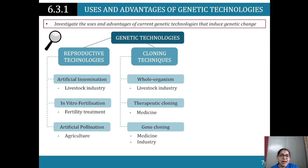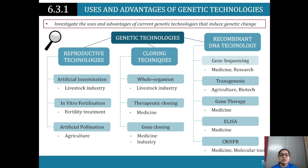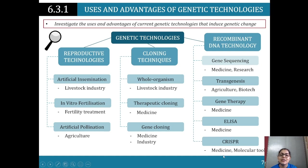Whole organism cloning, therapeutic cloning - that's medicine - and gene cloning as an industry. DNA technology helps us with gene sequencing, which is useful in medicine and research. Transgenesis is helpful for agriculture and biotech. Gene therapy, ELISA, and CRISPR are tools used in medicine and molecular biology.